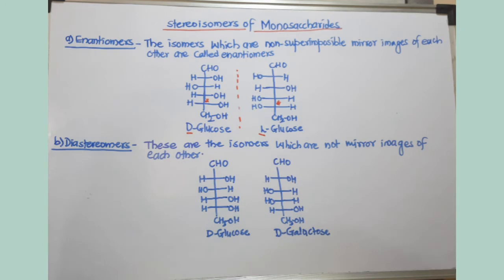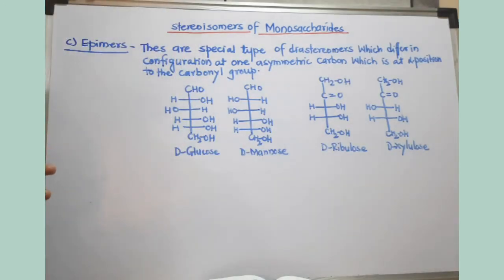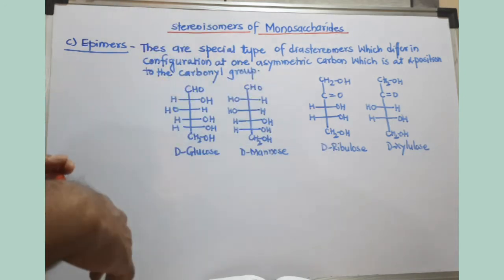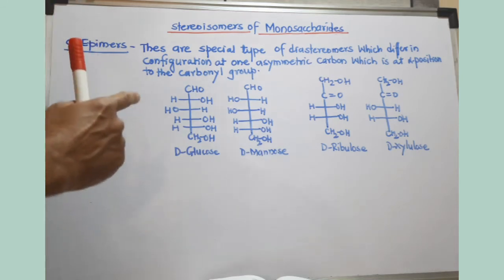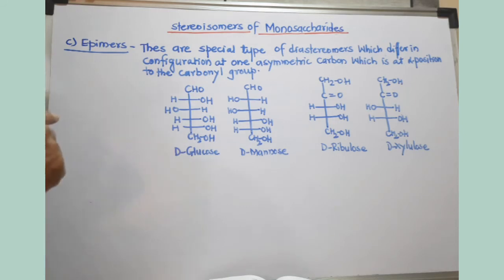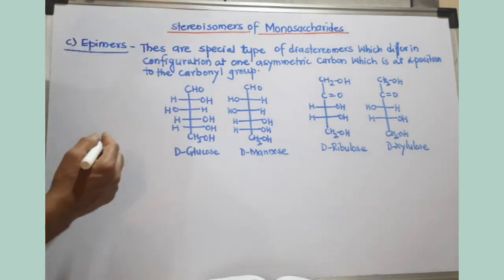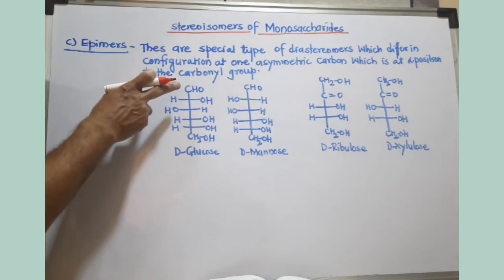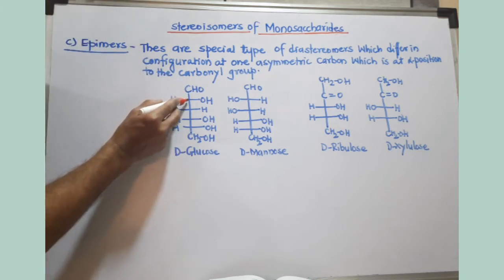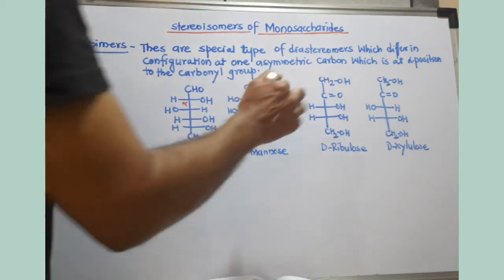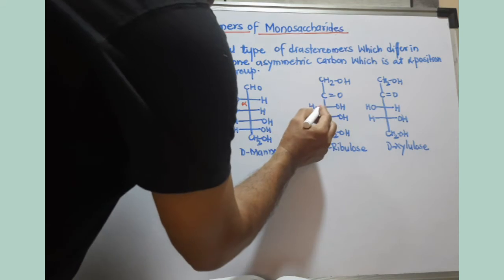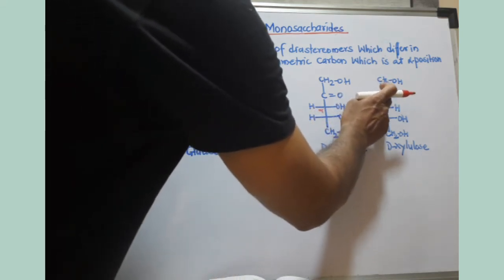Now we will discuss the meaning of epimers. Epimers are diastereomers — non-superimposable, not mirror images — but they are a special type of diastereomers which have different configuration at the asymmetric carbon at the alpha position to the carbonyl group. You find the carbonyl carbon first, and the carbon next to it is the alpha carbon. This applies to both aldoses and ketoses.